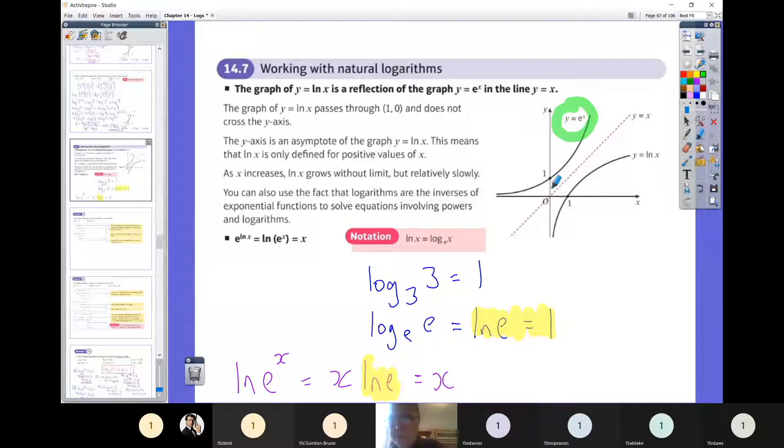So e to the power of nought would be one. Then anything to the, when the power is a negative, remember you're getting closer and closer to the origin. And obviously e to the power of two or e to the power of three, it just shoots up quite rapidly.